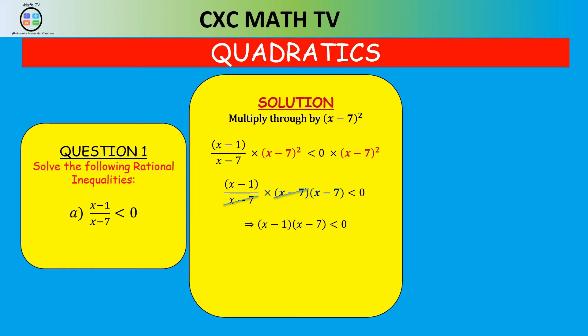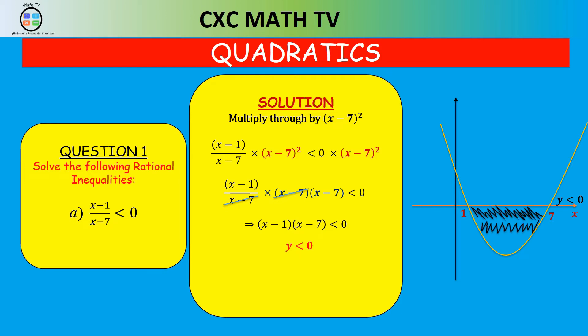This is in the form Y less than zero, so the two roots are one and seven. Drawing the graph with roots at one and seven, we want the portion where Y is less than zero. Shading that region, X is going to be between one and seven — that's your answer.